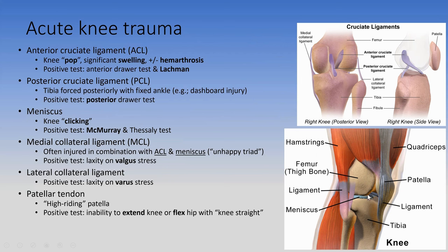The joint capsule has a finite amount of room, so significant swelling from blood and fluid—hemarthrosis—is very common in ACL injuries. The positive tests are the anterior drawer and Lachman tests; the difference is just the angle of the knee. You're pulling the tibia forward, and if the ligament is torn, the tibia slides forward excessively or there is no finite endpoint, confirming the ACL is no longer intact.